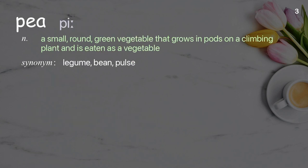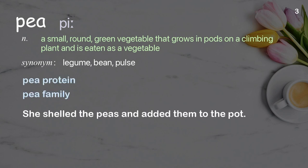Pea: a small round green vegetable that grows in pods on a climbing plant and is eaten as a vegetable. Examples: pea protein, pea family. She shelled the peas and added them to the pot.